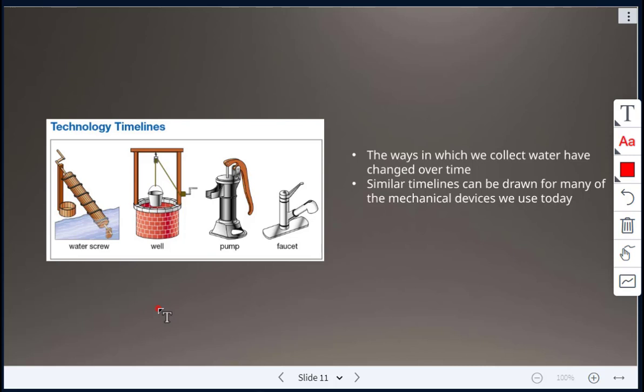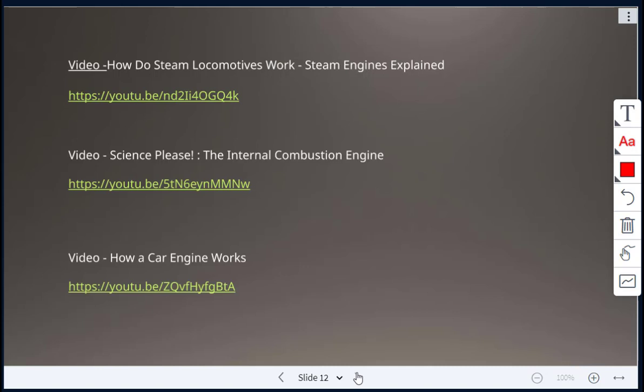Here we're looking at how we collected water. Water has changed over time. Water screw, a well, a pump, and now we see our faucet. Timelines like this can be drawn for many mechanical devices that we use today. So I have a few videos here to show on steam engines, internal combustion engines, and a car engine working. So I'm just going to pause here.